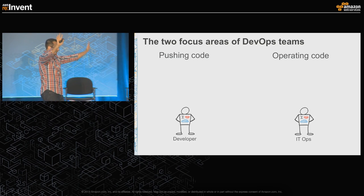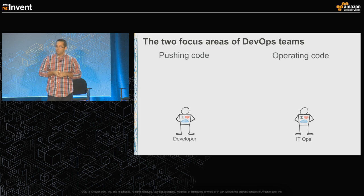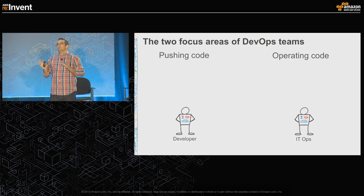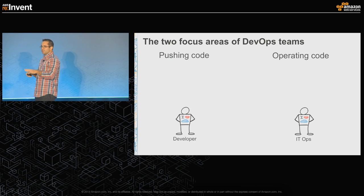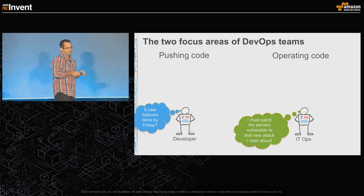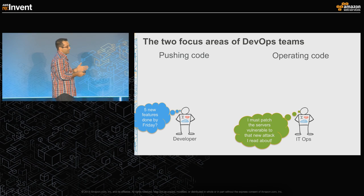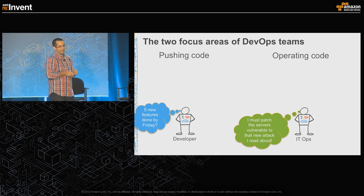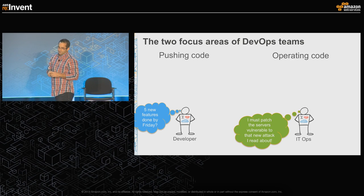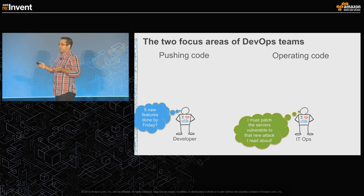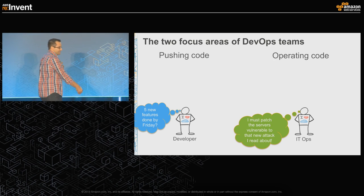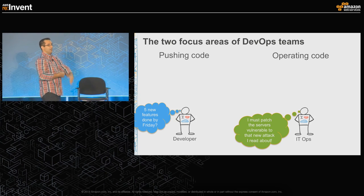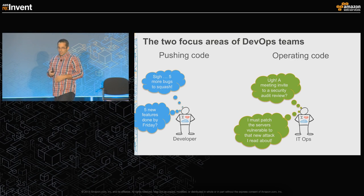Before jumping into the two key topic areas, let me play a little game: what is the average developer thinking on the pushing-code side in a given day? The developer comes in, grabs coffee, and has five new features due by Friday. On the operations side, you've got to patch servers or respond to a new security vulnerability. There's friction to continuously delivering and updating things. This isn't necessarily Windows-specific — it's the category of how do we get Agile, how do we do DevOps? There are more bugs to squash.